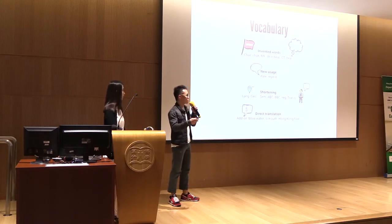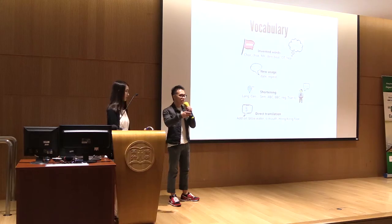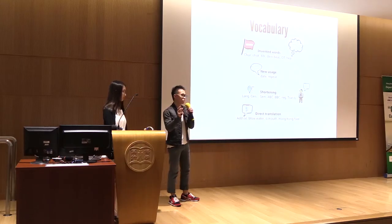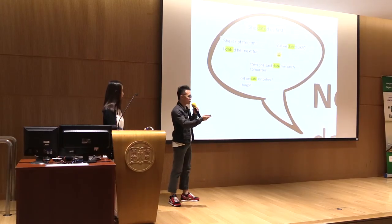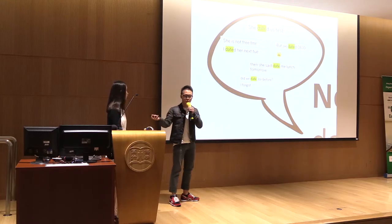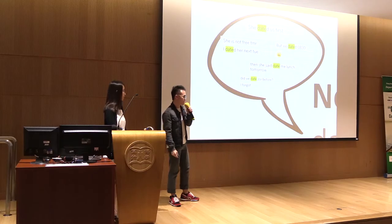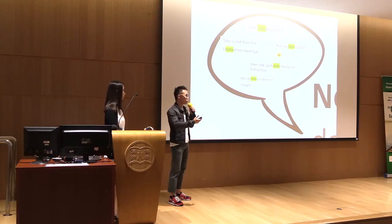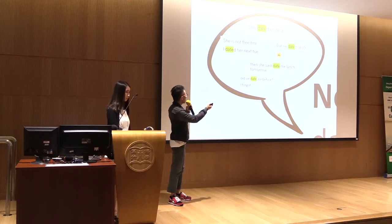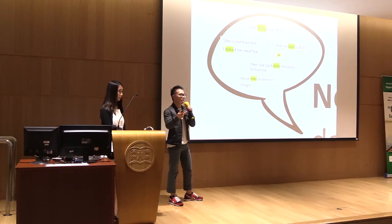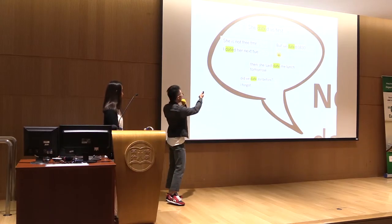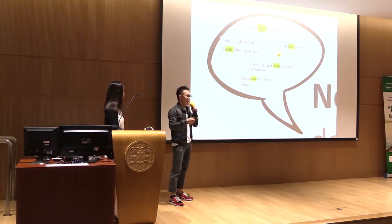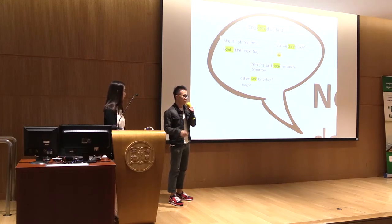The second category is new usage of English vocabulary — taking English words and giving them a new grammatical role, turning a noun into a verb or vice versa. 'Date' is a clear example. We use it as a verb: 'she dated us first' means 'she made an appointment with us first,' and 'I dated her next Tuesday' means 'I am having a meeting with her next Tuesday.' You have to be a local Cantonese speaker to understand this grammar.